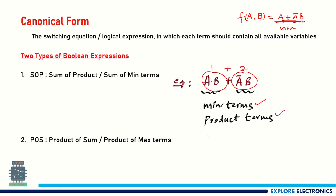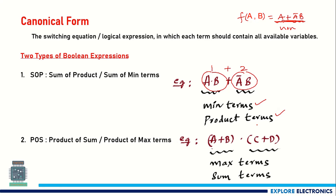We have another kind of expression called POS — Product of Sums, also called product of maxterms. For example, (a + b)(c + d): here we are taking a product of two sum terms. These sum terms are called maxterms, and the product of these sums is called a product-of-sum expression.